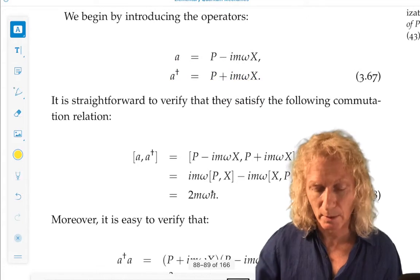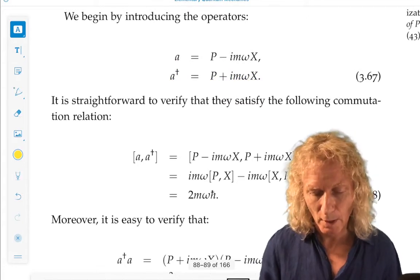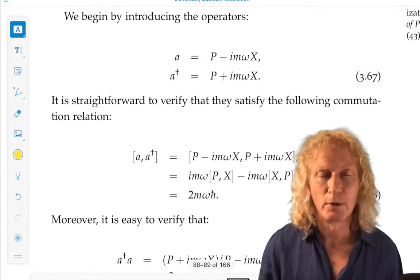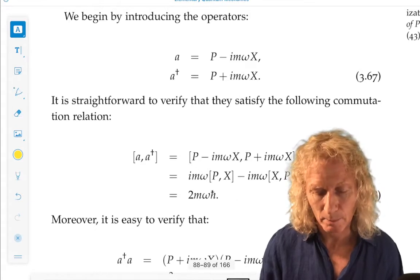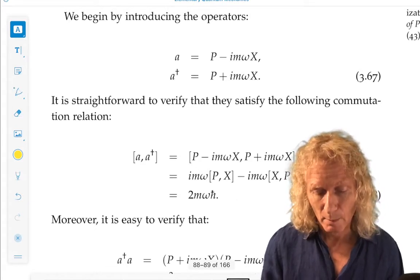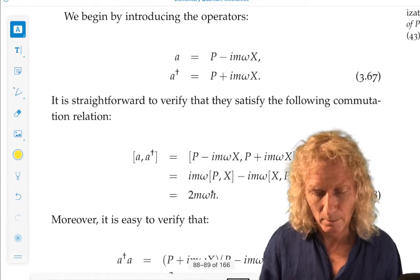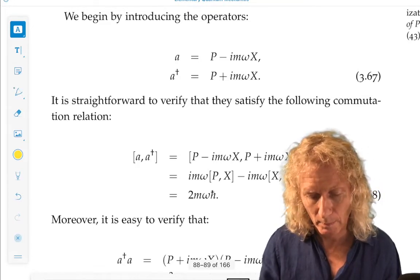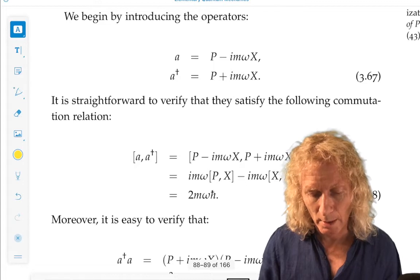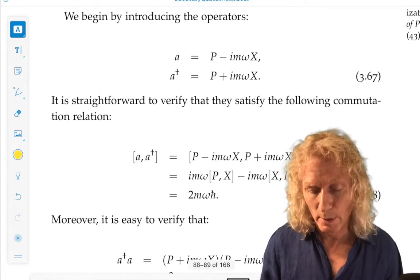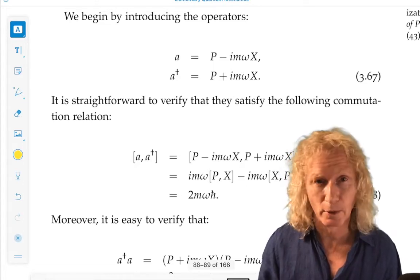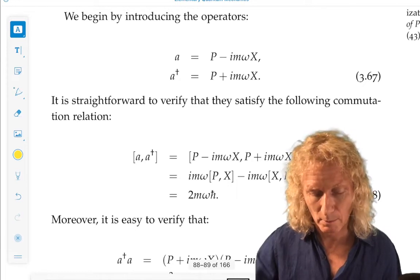You're going to want to refer back to these definitions over and over. Note that a is not self-adjoint and a dagger is not self-adjoint. But if you take the adjoint of a, you get a dagger. You take the adjoint of a dagger, you get the other one. Because P and X are self-adjoint.